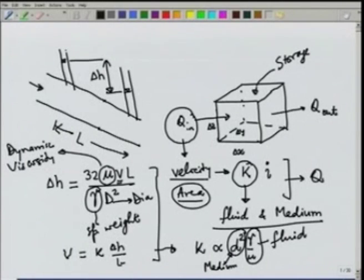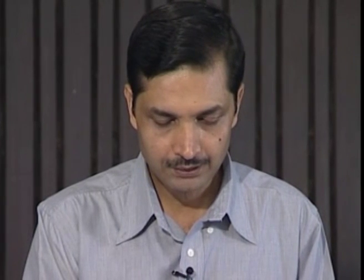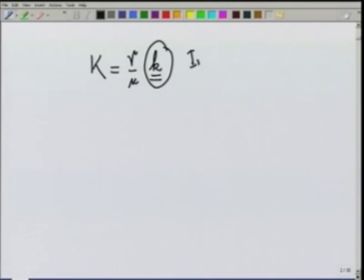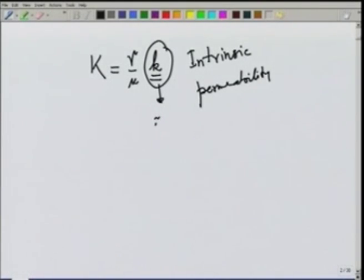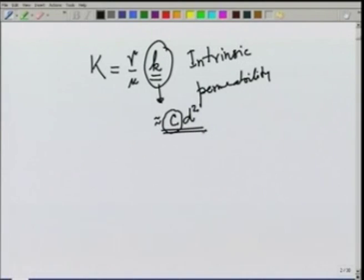In porous media, Darcy's law states that v equals k times delta h over L. Comparing these equations, k depends on the medium property — the diameter of the particle — and also on the fluid property — the specific weight gamma and dynamic viscosity mu, expressed as gamma over mu. This leads to separating k into gamma over mu times the intrinsic permeability, which is only a property of the medium. Typically, intrinsic permeability is some constant times the grain size squared based on the pipe flow analogy, where the constant c may differ for different porous media such as sand and clay.